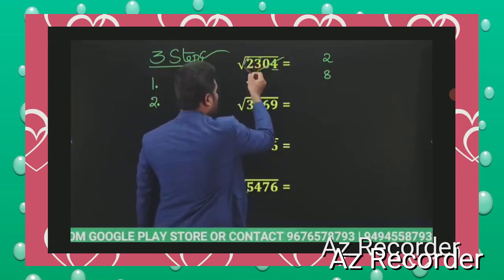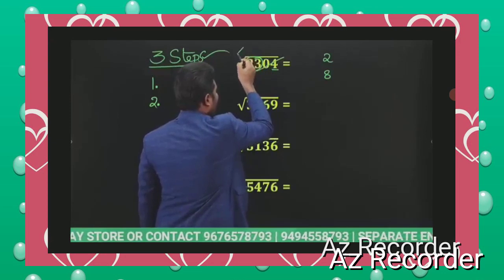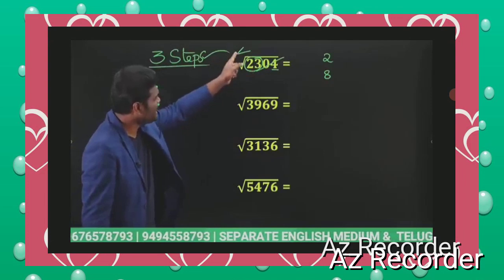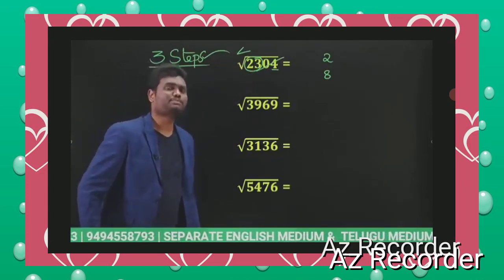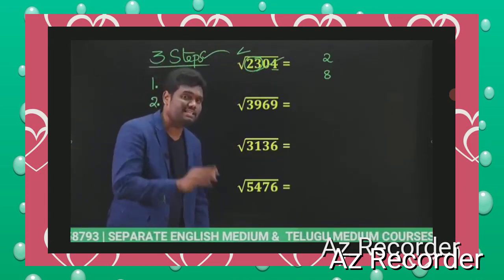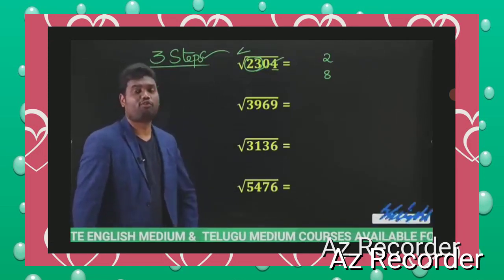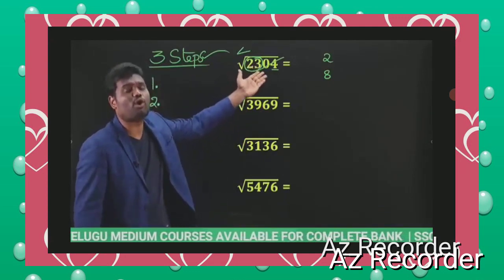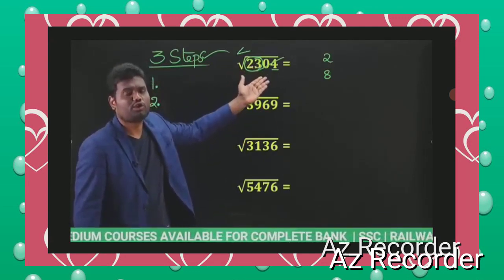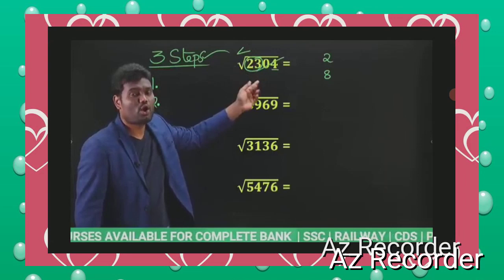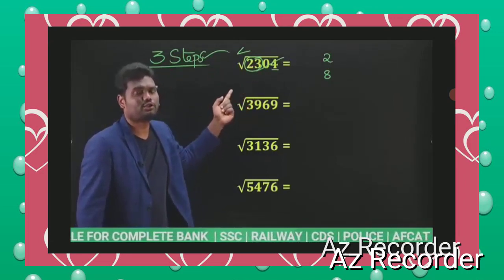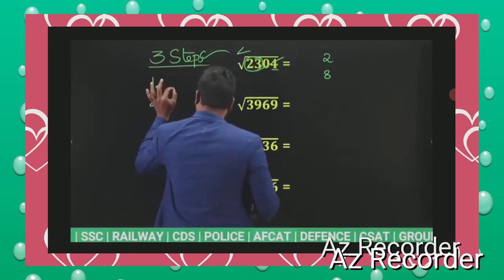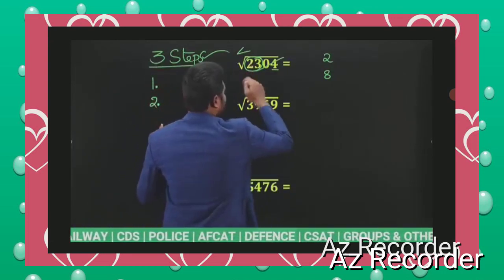The next step is to find a perfect square close to this number and less than this number — that is very important. What is a perfect square close to 23 and less than 23? If you take 5 square, that is 25, which is more than 23. So the answer is 4 square, which is 16.